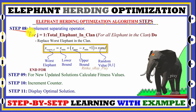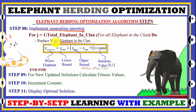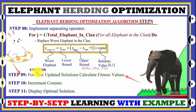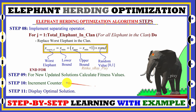Next we have the second operator — the separating operator. For the separating operator, we consider the elephant fitness values computed in step four and replace the worst elephant in the clan. Here j represents elephants from one to the total number in the clan. The worst elephant is replaced using lower bound, upper bound, and a random value. After that, we calculate fitness values for each agent and find the best solution among all updated solutions.